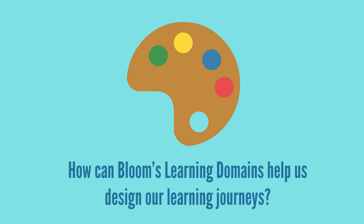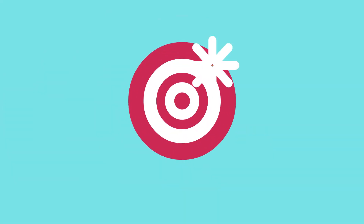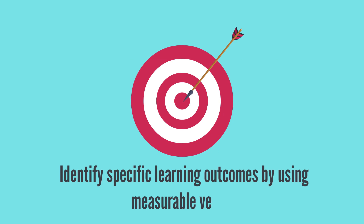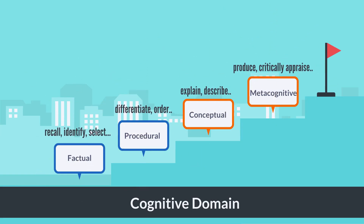So, how can Bloom's learning domains help us design our learning journeys? Bloom's associates different action verbs within each domain to describe learning outcomes, and this represents the beginning of our learning journey. If we are able to identify specific learning outcomes using measurable verbs, we will know exactly what we would like the learners to be able to do by the end of the learning activity. Here are some verbs associated with each area of the cognitive domain. If we want learners to recall or identify specific facts, we know we are targeting the low end of the cognitive domain. If we want learners to explain or discuss specific topics, we know we're targeting the conceptual level.